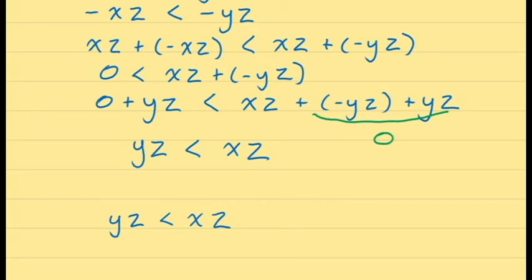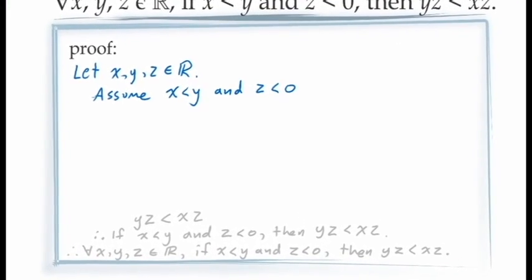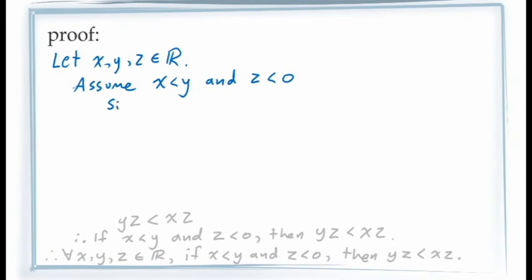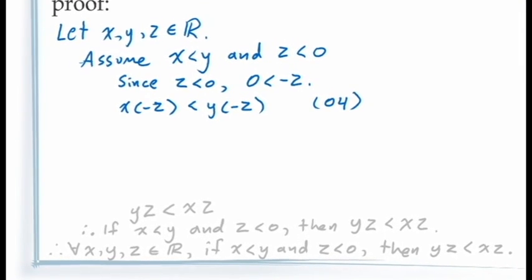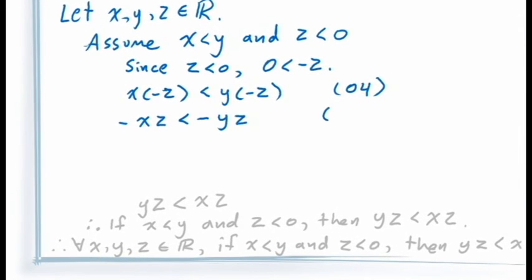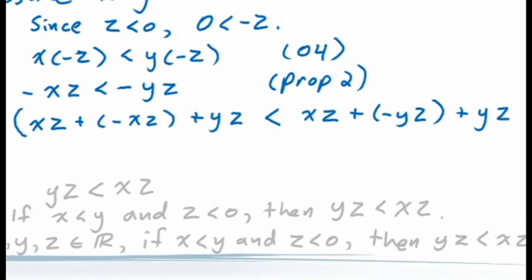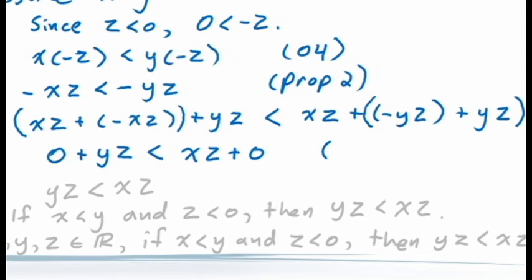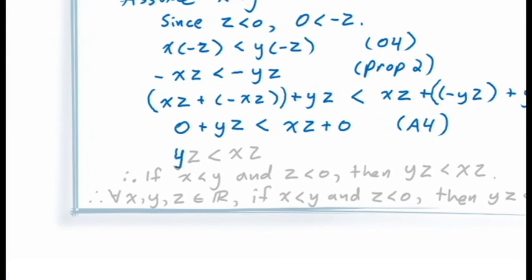With this demonstration, let's return to our proof. We've already assumed x < y and z < 0. Since z < 0, we can conclude from the proposition just proven that 0 < -z. Axiom O4 then allows us to multiply -z on both sides of the inequality, preserving it. Proposition 2 gives us -xz < -yz. To get the inequality we're looking for, we add both xz and yz to both sides. Grouping, we get xz + (-xz) = 0 on the left and (-yz) + yz = 0 on the right, giving 0 + yz < xz + 0, which simplifies to yz < xz — our consequent.